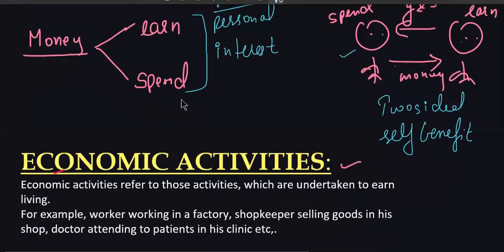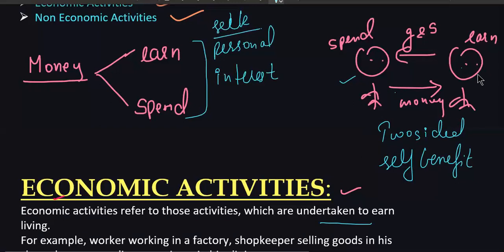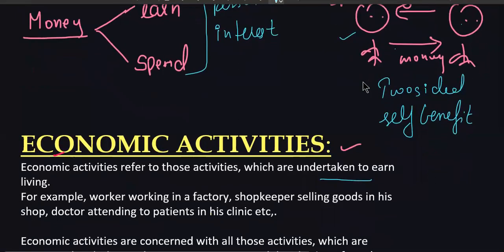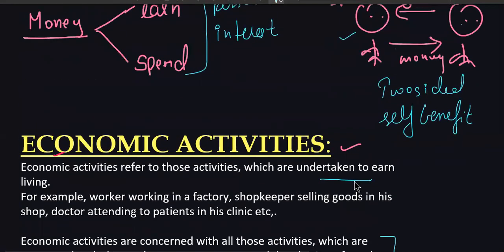Let's read the definition. Economic activities refer to those activities which are undertaken to earn a living. This person is earning income — their livelihood. They will consume goods and services and survive their life. For example, a worker working in a factory, a shopkeeper selling goods, and so on. Economic activities are concerned with production, consumption, and distribution — which we will see in our next video. For now, we have only seen the meaning of economic activities. We will cover different types of economic activities in our next video.